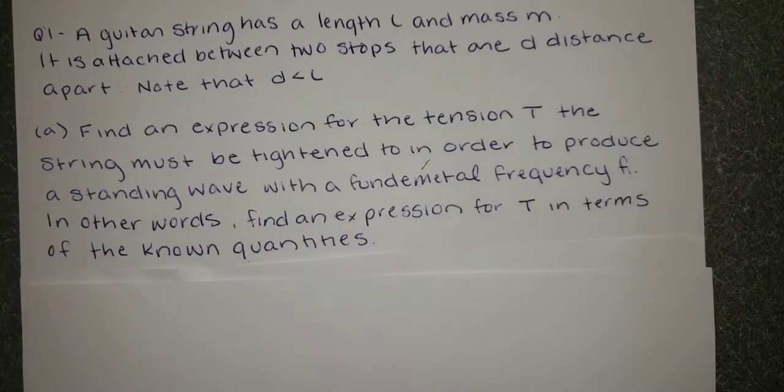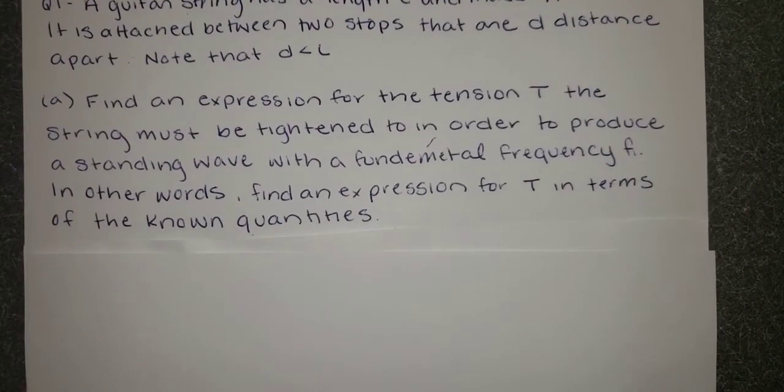Now part a asks us to find an expression for the tension T that the string must be tightened to in order to produce a standing wave with a fundamental frequency of f1. In other words, we're going to find an expression for T in terms of the known quantities.